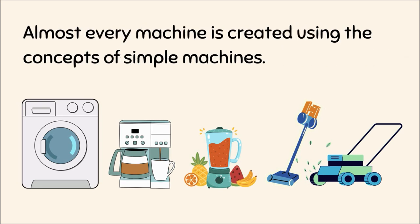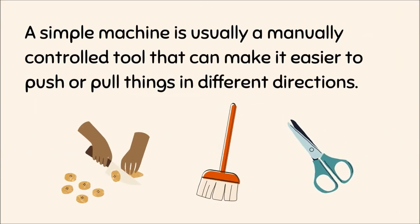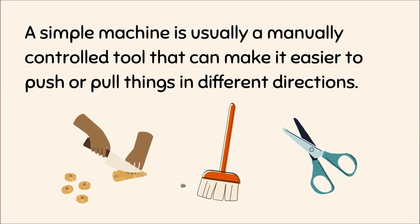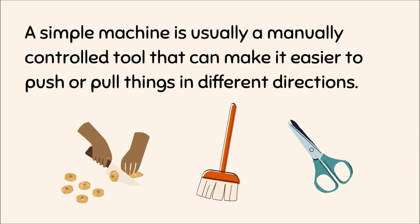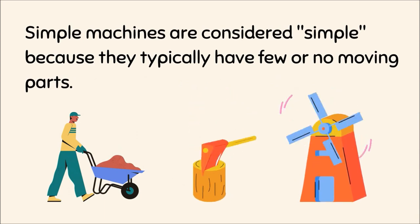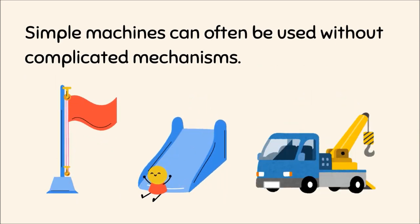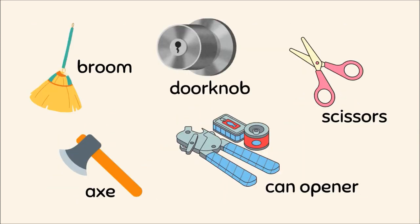Almost every machine is created using the concepts of simple machines. What is a simple machine? A simple machine is usually a manually controlled tool that can make it easier to push or pull things in different directions. Simple machines are considered simple because they typically have few or no moving parts. Doorbell, scissors, axe, and can opener are some examples of simple machines we use in our day-to-day life.